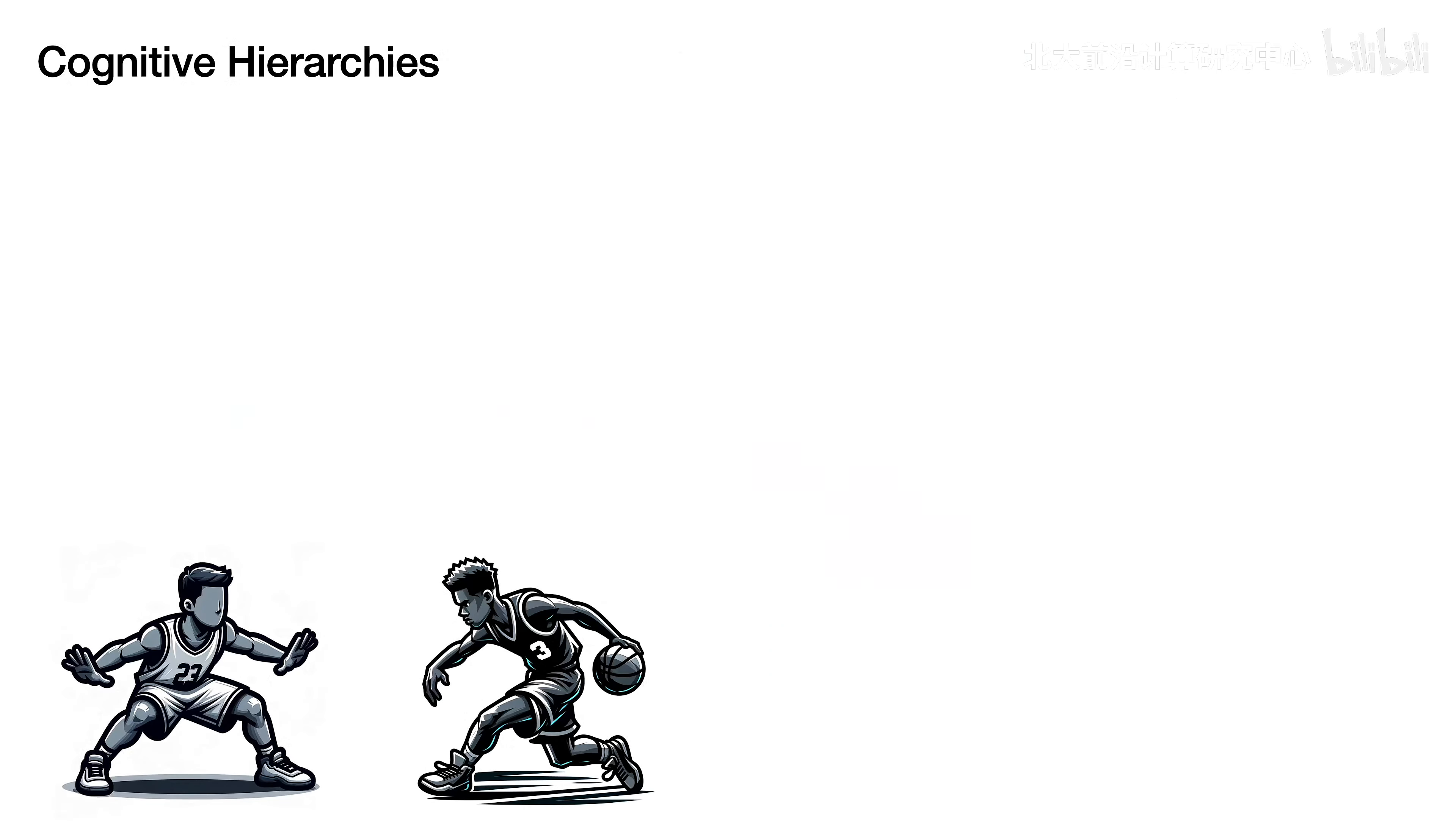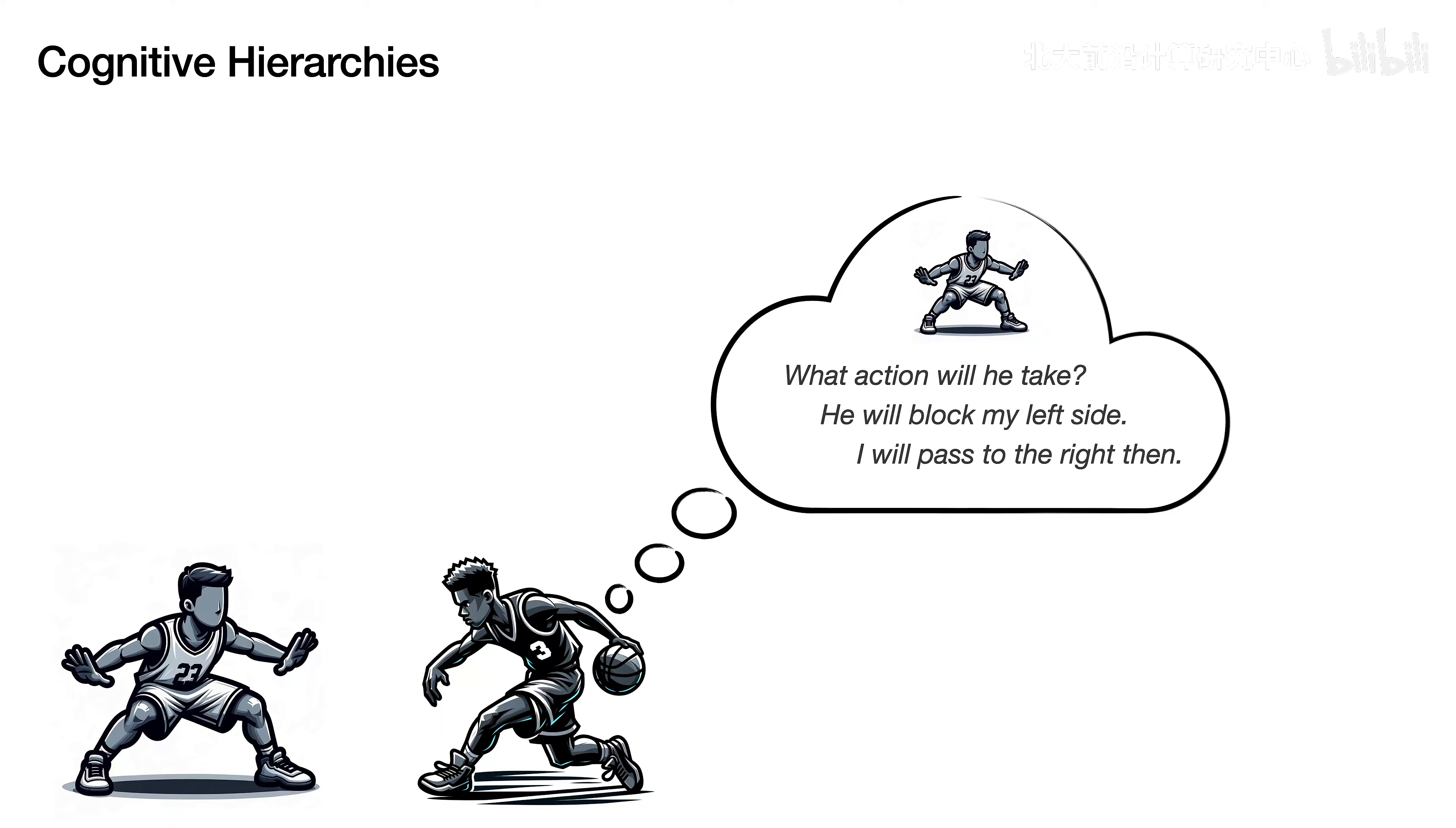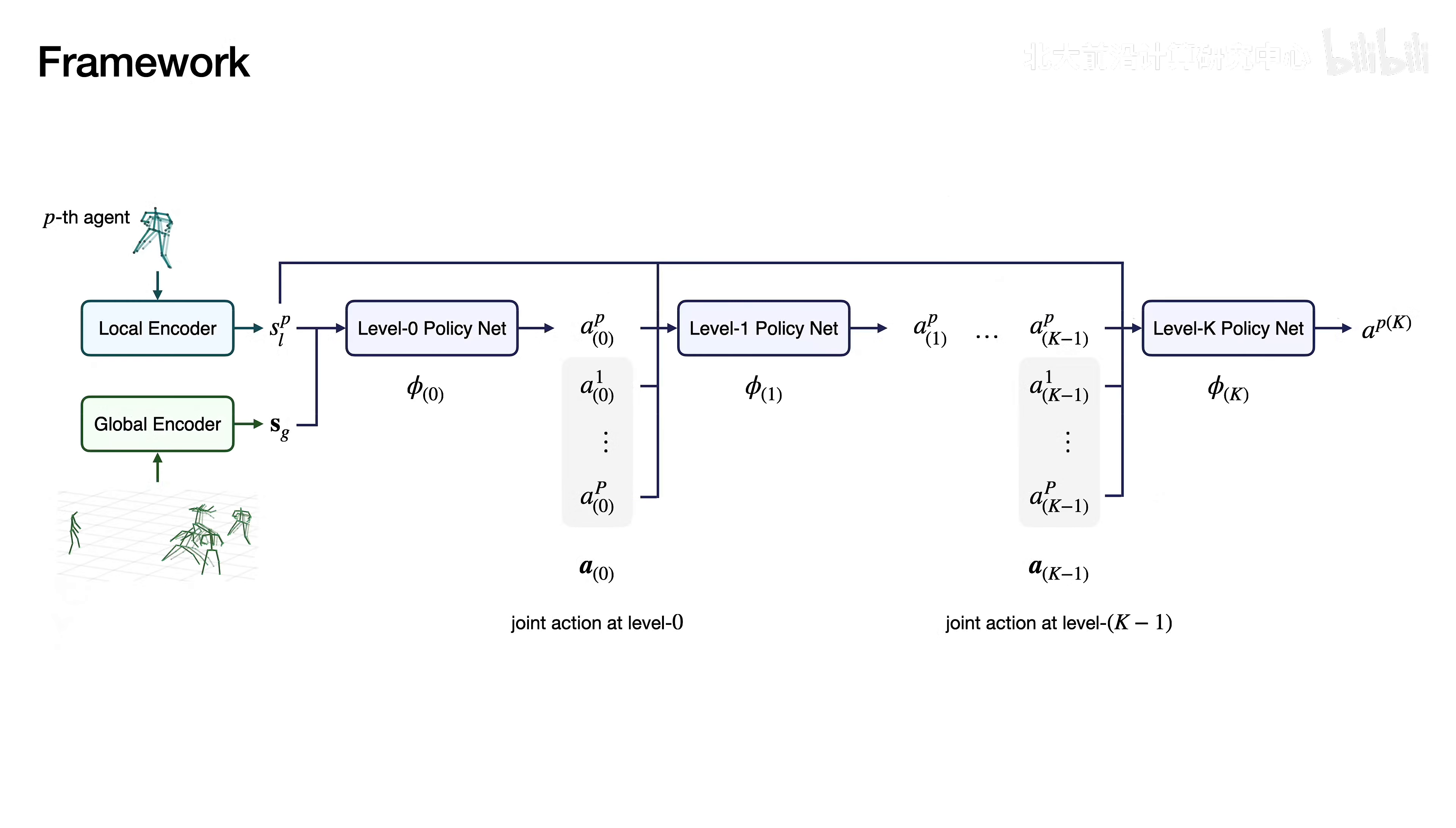We note that individuals implicitly plan their actions based on their predictions of others' likely actions. Meanwhile, others engage in similar decision-making processes from their perspectives. By recursively considering these reasoning steps, we deduce that a Level-K agent acts based on the actions of a Level-K-1 agent.